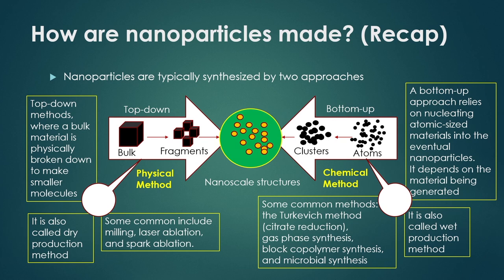The physical method is called the top-down method, where bulk material is physically broken down to make smaller molecules. The chemical method is based on nucleating atomic-sized materials into desired nanoparticles. In chemical methods, it depends on what type of material is to be generated, based on which the chemical method should be executed.